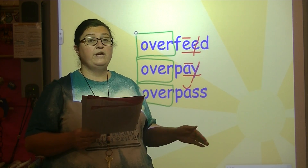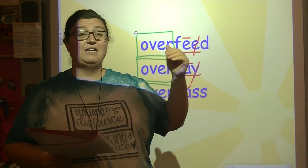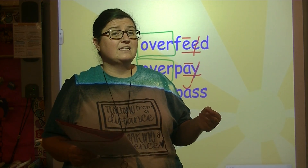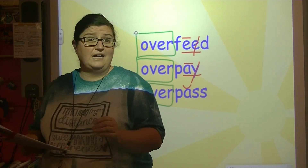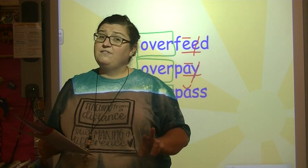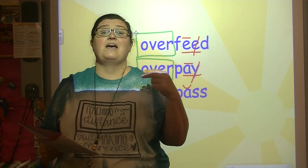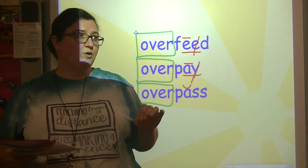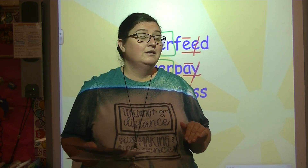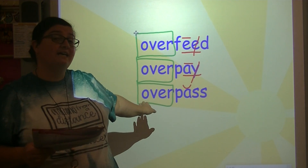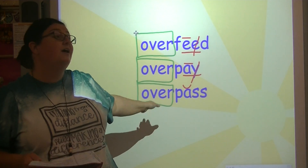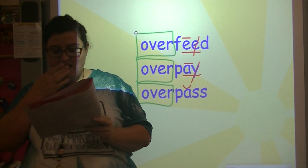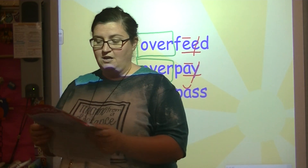A suffix and a prefix are both called affixes. Affixes are what you add to a root word. A prefix and a suffix are both considered affixes. Which one do you add to the beginning of a word? A prefix. What's added to the end of a root word? A suffix. And they change the meaning of the word — they're used to change the meaning of a word.